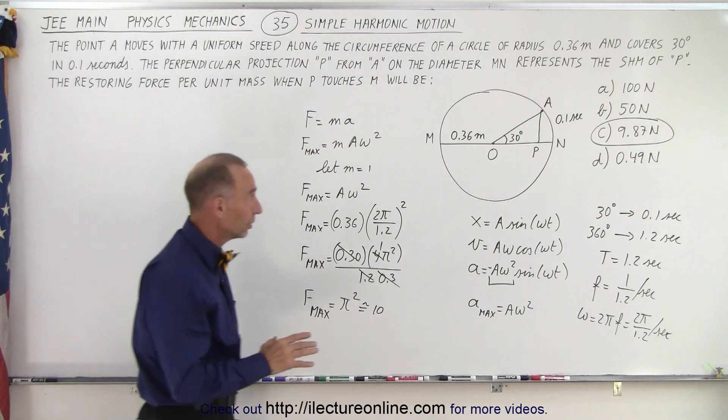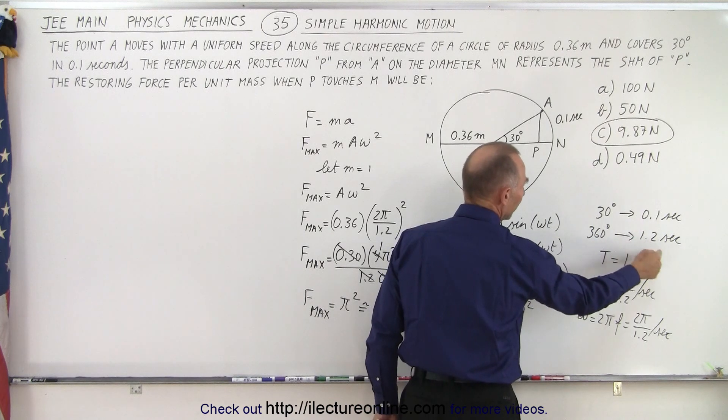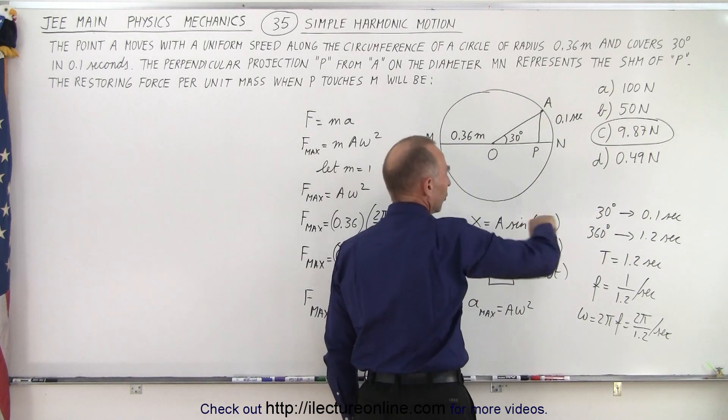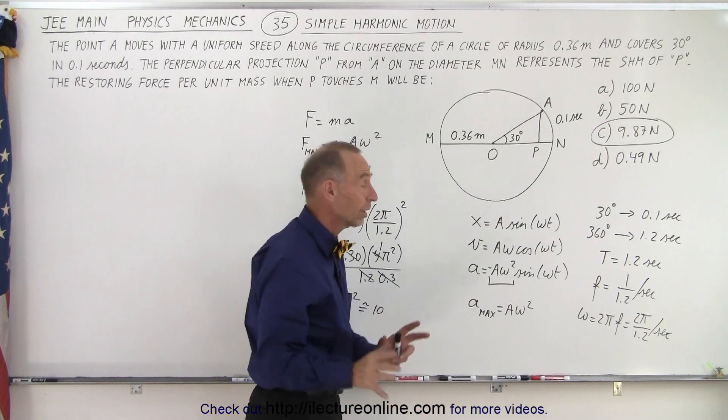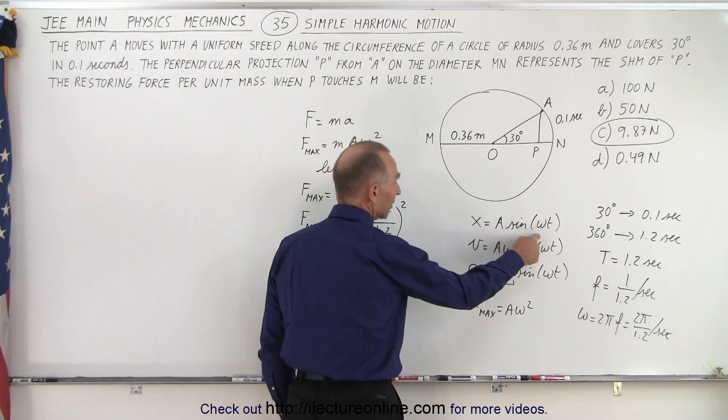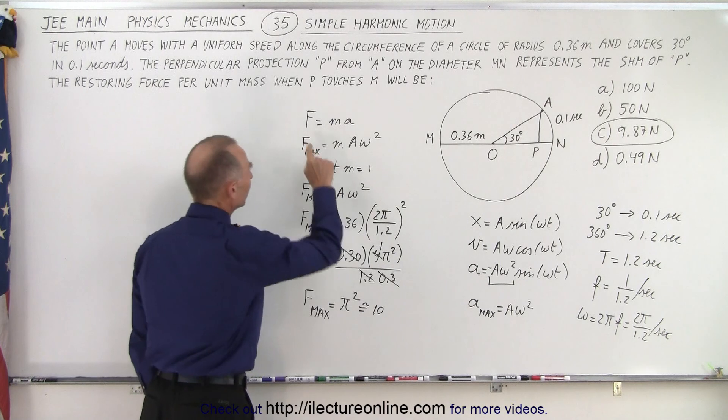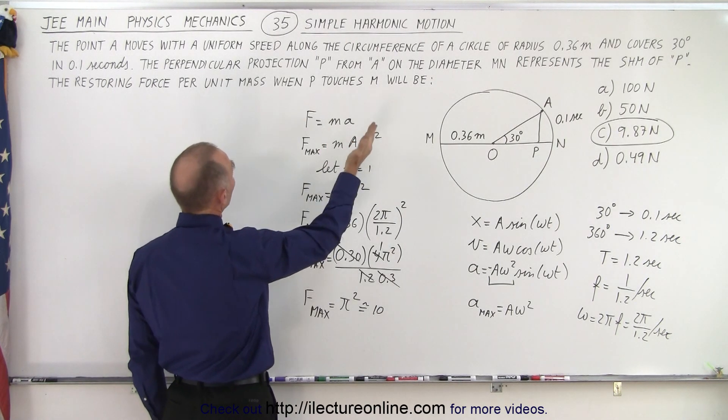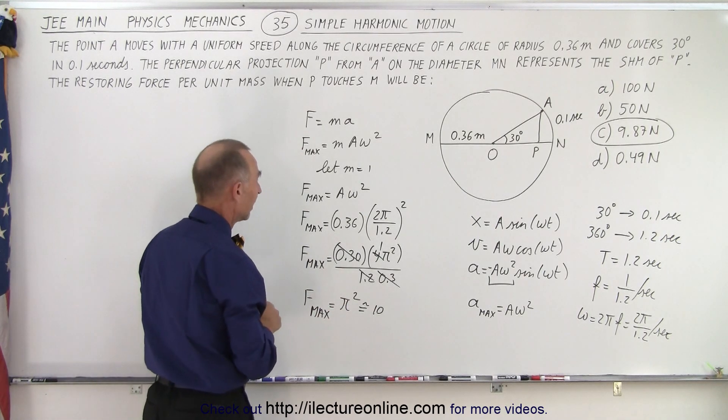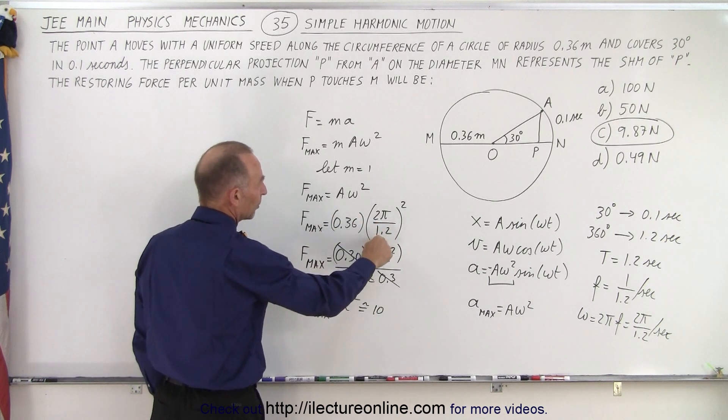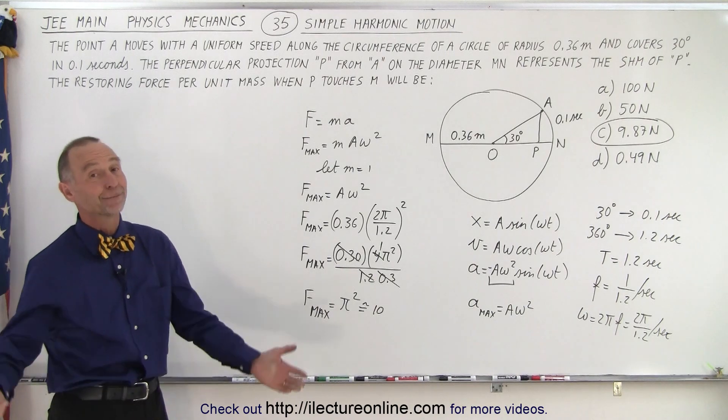So again, the way we worked it out is, first of all, we have a diagram. We realize that we cover an angle of 30 degrees in 0.1 seconds. That means 360 degrees in 1.2 seconds. The period of oscillation then, because we go around in a circle once every 1.2 seconds, the period of oscillation is 1.2. The frequency is 1 over that, and then omega is 2 pi f. But starting with the position equation, x equals a sine omega t, we get the velocity equation, we get the acceleration equation. So we realize that the maximum acceleration is always going to be equal to a times omega squared. And so since we have f equals ma, a now becomes a omega squared. m is the mass, but since we're doing it per unit mass, we can let m equals 1. So f max will be a omega squared. That would be per unit mass. a is 0.36, omega we found to be 2 pi over 1.2. We can do some simplification. Then it turns out f max is pi squared, which is about 10, or the correct answer, 9.87. And that is how it's done.